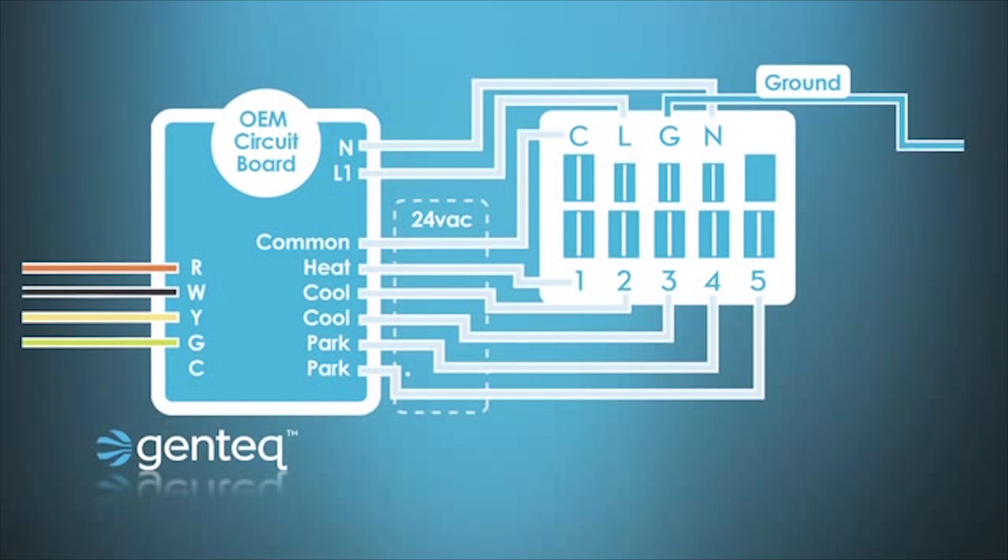If you look at this at a quick glance, you might think well that looks really the same as a PSC motor other than the line, ground, and neutral connections on the motor. But what you'll notice if you look at the schematic for the system or measure voltage is that the voltage going to taps one through four is 24 volts, which is very different than a PSC motor.